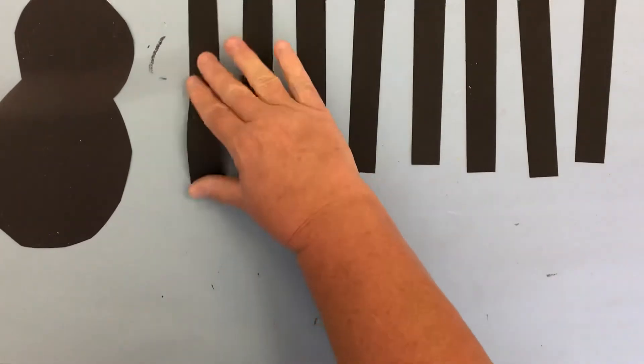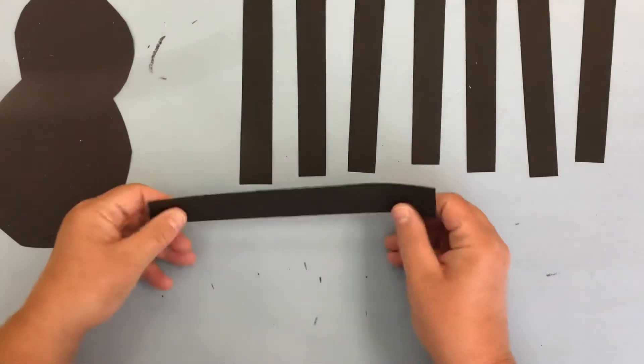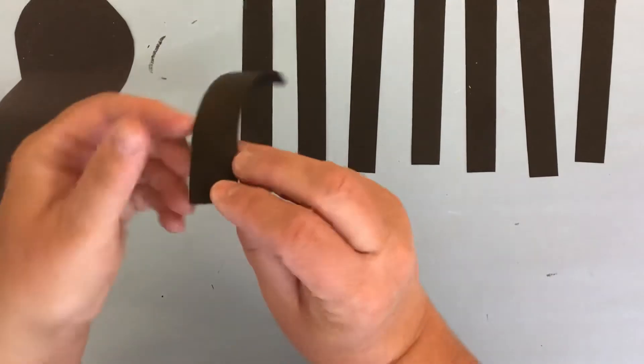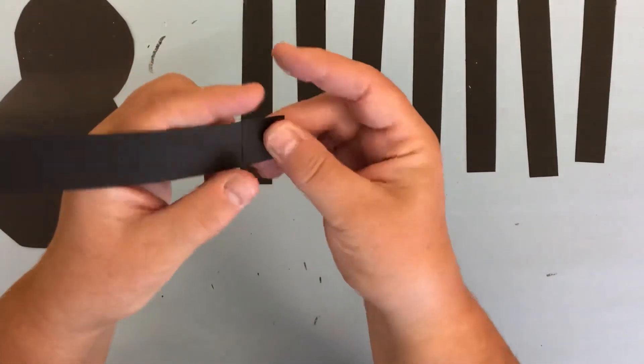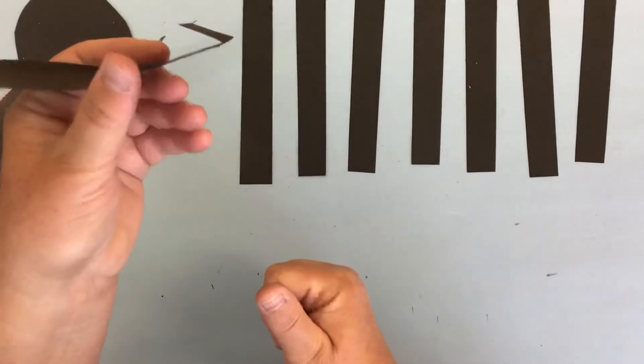We are going to do something called an accordion fold. An accordion fold is where you take and we're going to fold over just a little bit. See how I folded that?